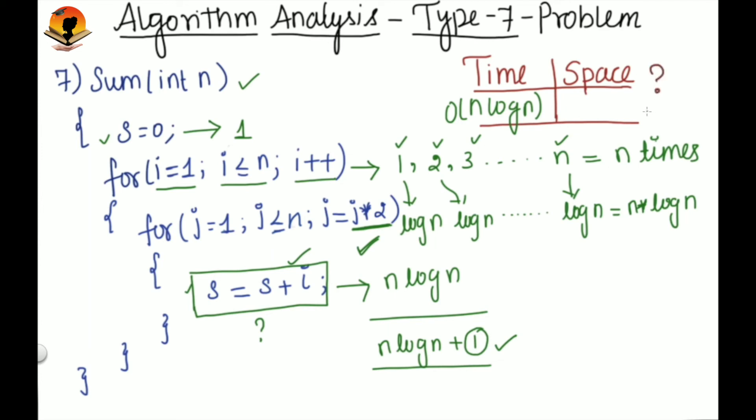Now what is the space complexity? Here s, i, and j are the variables we are using other than the input variable, and each one takes one unit of memory. The total memory unit is 3, which is constant. So the space complexity for this problem is order of 1.